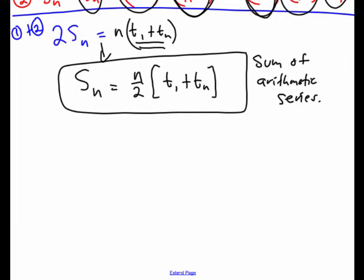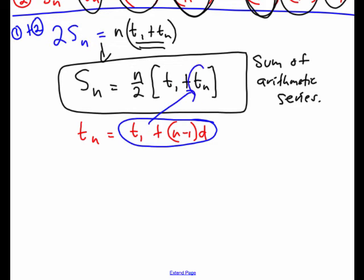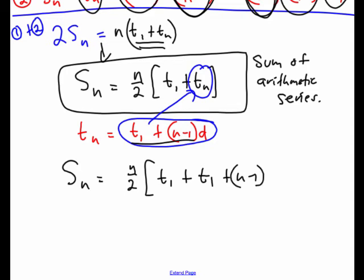Now there is another formula we can use, and that's from the fact that we know that term n is t1 plus n minus 1 times d. And what we can simply do is replace this n to this position. So I'm going to do that. So Sn is n over 2, term 1 plus this red piece, t1 plus n minus 1 times d.